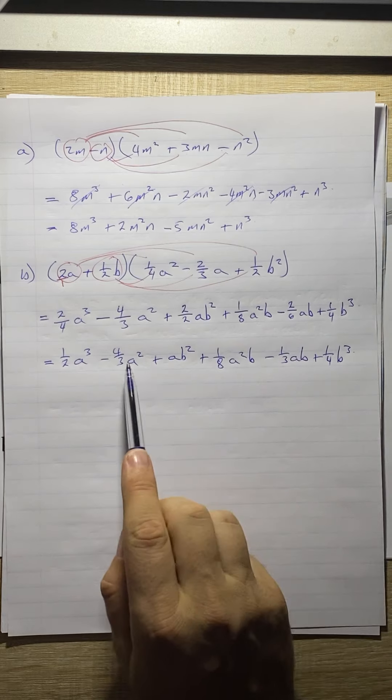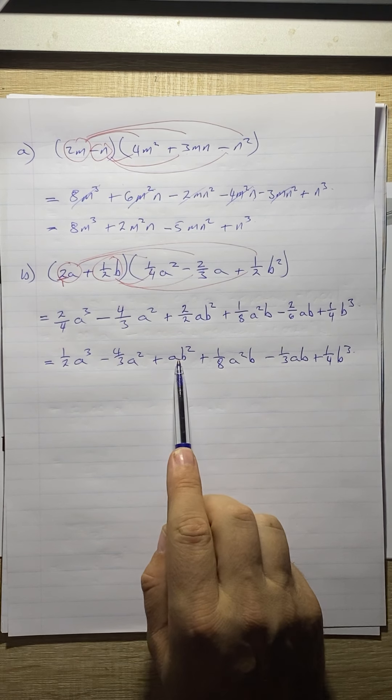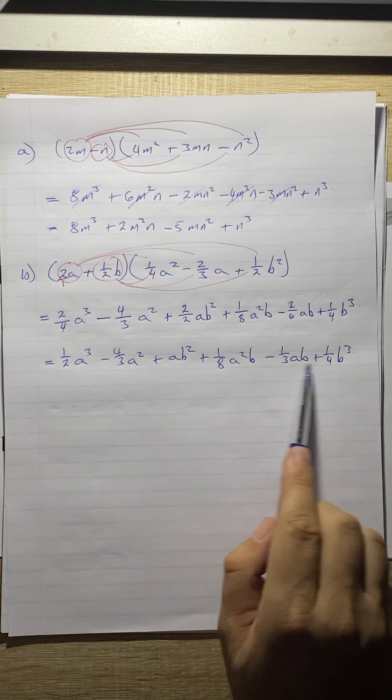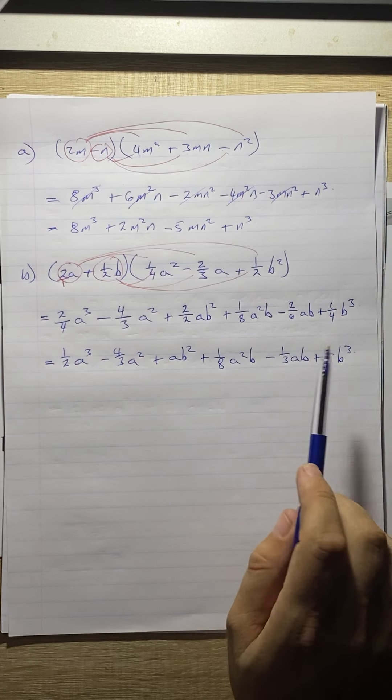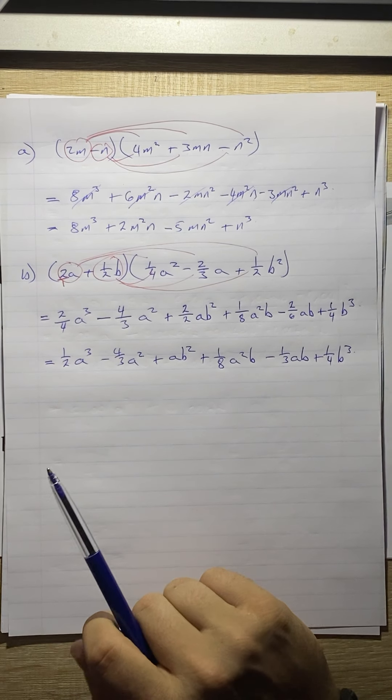Now, we don't have any like terms here. We've got an a cubed, no other a cubes. a squared, none. a b squared, none. a squared b, none. a b, and then b cubed. And that is your final answer.